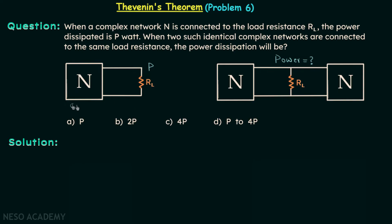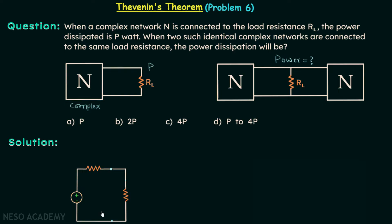In case 1 we have a complex network N connected across the load resistance RL. We can replace the complex network by VTH connected in series with RTH. This is our Thevenin's equivalent circuit for this network arrangement, where this voltage source represents VTH, this resistance represents RTH, and this resistor is our load resistor RL.